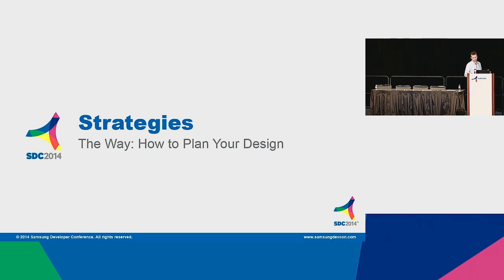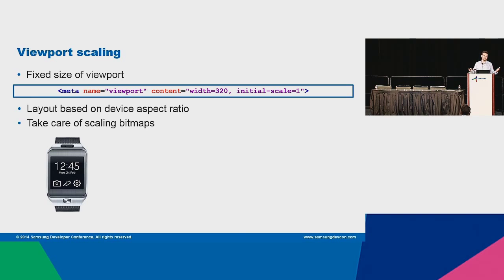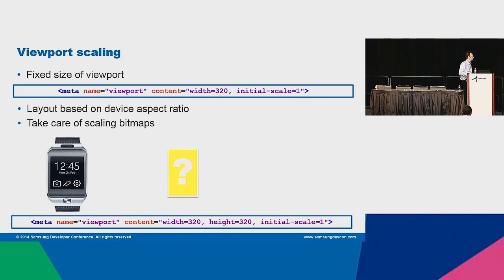We have three strategies. First is viewport scaling. You can set your viewport to a fixed width, so from the developer's point of view it will always be 320 pixels wide, even if the screen is Full HD. This is actually the easiest way to make a web application where your layout is scaled. But you need to be careful with bitmaps, because scaling bitmaps will reduce their quality — they will become pixelated.